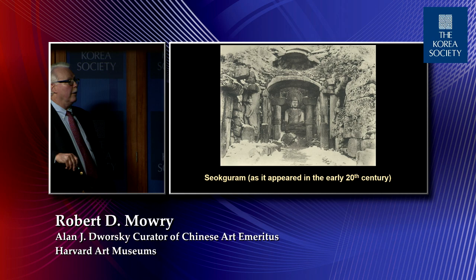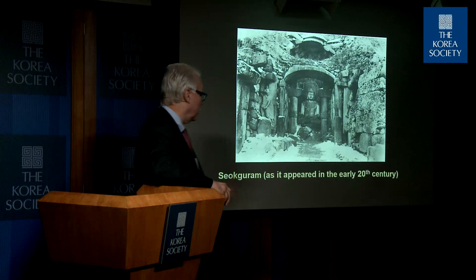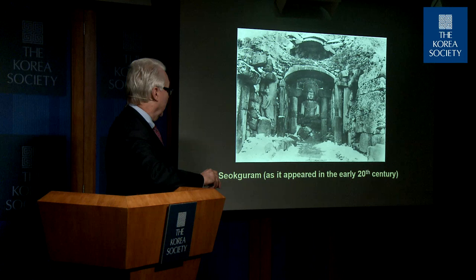We look at Sakuram today and assume it hadn't changed over the centuries, but it was built in the 8th century and used as an active temple well into the Koryo period. When Buddhism was pushed aside with the coming of the Joseon dynasty, the temple was basically abandoned. The dome collapsed. But fortunately the Buddha was not damaged, and most of the sculptures were not damaged — one of the virtues of working in granite.